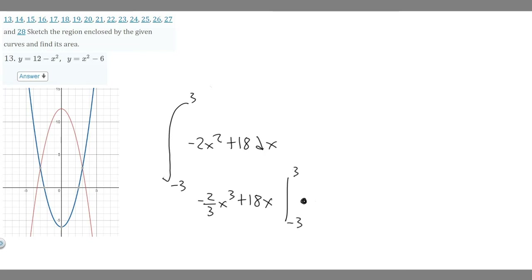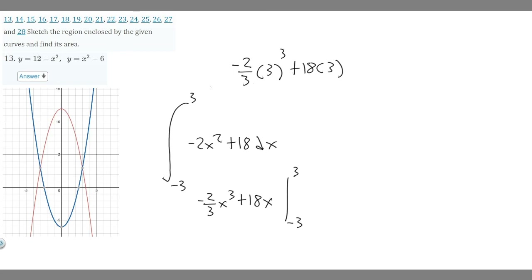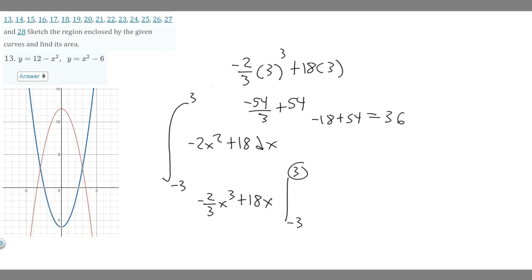Plugging in 3: minus 2 over 3 times 3 cubed plus 18 times 3. Since 3 cubed is 27, we get minus 2 over 3 times 27, which is minus 54 over 3, which simplifies to minus 18. Then 18 times 3 is 54. So we have minus 18 plus 54, which equals 36. When we plug in 3, we get 36.